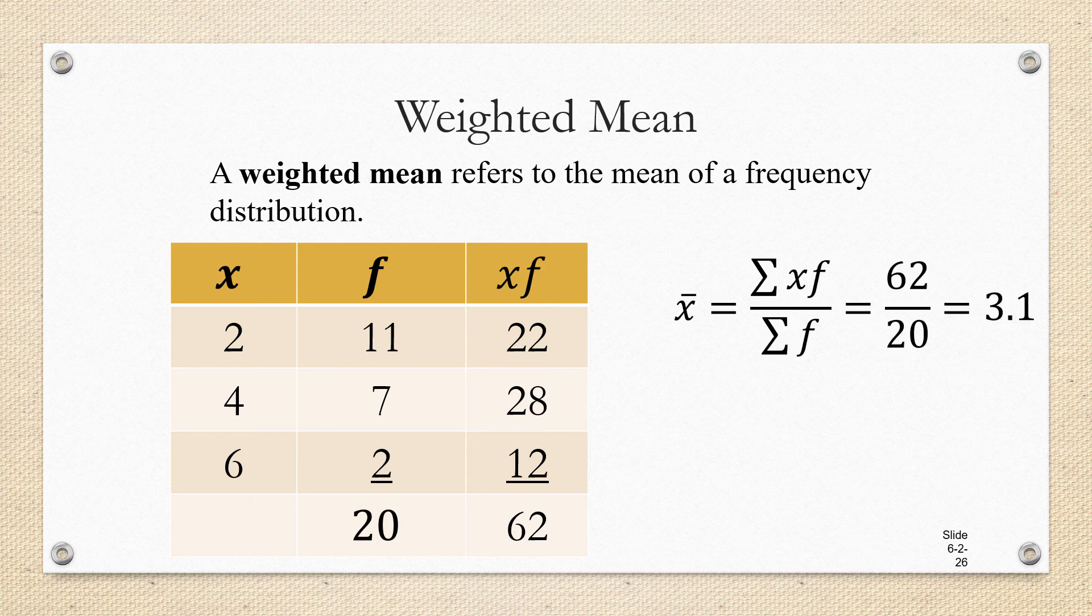So that's going to be 62 divided by 20, which is 3.1. And that's a reasonable answer, by the way, 3.1, because we had a lot more twos and fours than we did sixes. So it makes sense that our mean would have been somewhere between two and four.